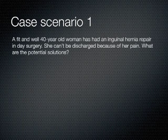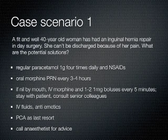Case scenario one: a fit and well 40-year-old woman has had an inguinal hernia repair in day surgery and cannot be discharged because of pain. You may want to prescribe regular paracetamol at 1 gram four times daily and a non-steroidal anti-inflammatory drug, as well as oral morphine PRN every 3 to 4 hours. If the patient is nil by mouth, try administering morphine intravenously at 1 to 2 mg boluses every 5 minutes. Stay with the patient, consult a senior colleague if necessary, and ensure IV fluids and adequate antiemetics. If none of these work, setting up a PCA might be beneficial. The amount of analgesia needed will depend on whether the surgery was open or laparoscopic — open surgery typically requires more.